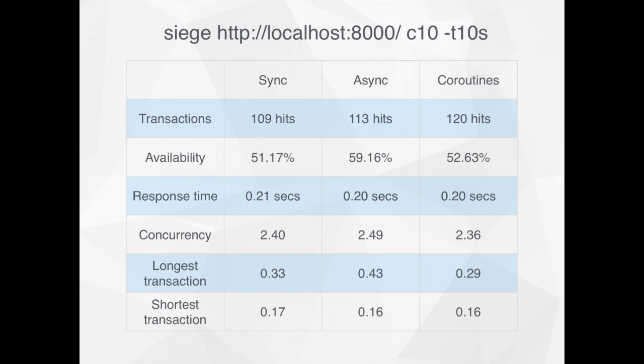If you're not familiar with Siege, it's an Apache command line tool. Basically you point it at any website or network resource and say: hit it with a number of concurrent connections — in this case 10 — over 10 seconds with -T10S. These are the results using a sync pattern, an async pattern, and a coroutine pattern. We can see that just in my little example on my local MacBook Air with a solid state drive, there's not a lot of difference, but still the coroutines perform just a little bit better than the other patterns.